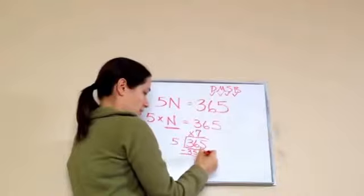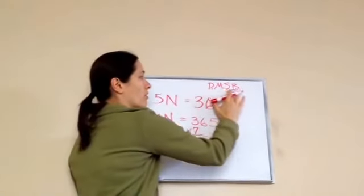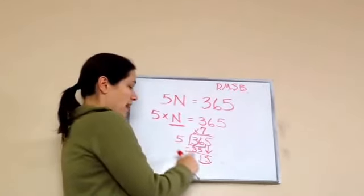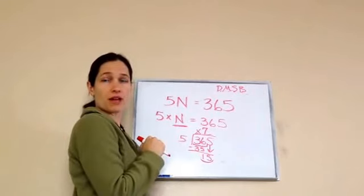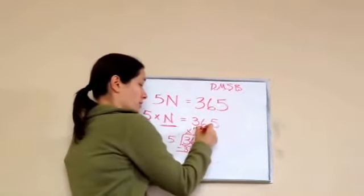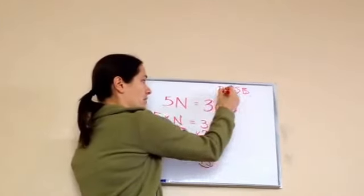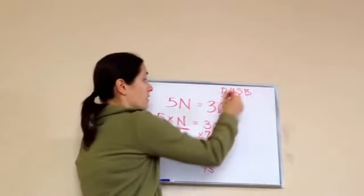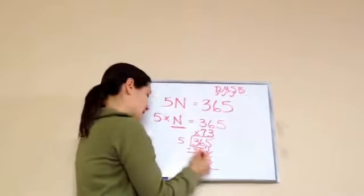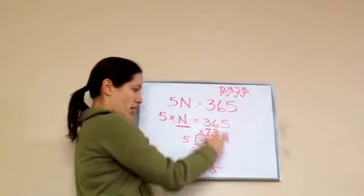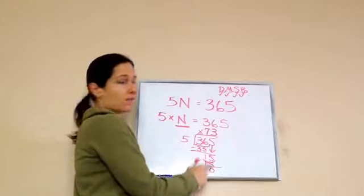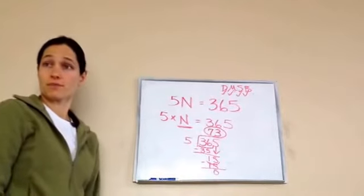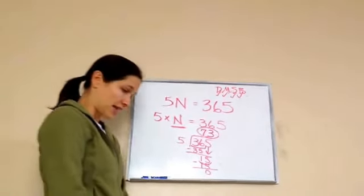Now we're working with 15. Start all over: 5 times what equals 15? 3. Very good. Put 3 here. Divide, then multiply: 3 times 5 is 15. Subtract: 15 take away 15 is 0. Anything else to bring down? No. Once you get a 0, you know you're done. So our final answer — I'm going to take away the X — final answer is 73. Feel like you understand it? Yeah. And that is Lesson 26.